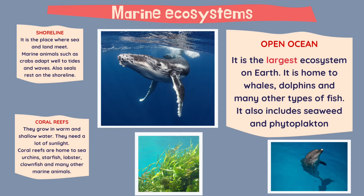The last of the marine ecosystems is the open ocean. It is the largest ecosystem on earth. It is home to whales, dolphins and many other types of fish. It also includes seaweeds and phytoplankton.